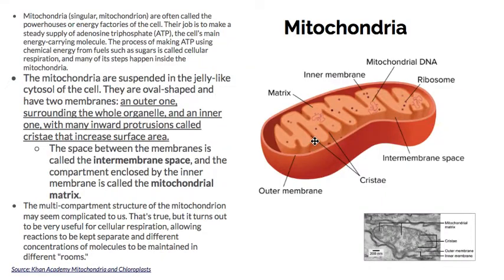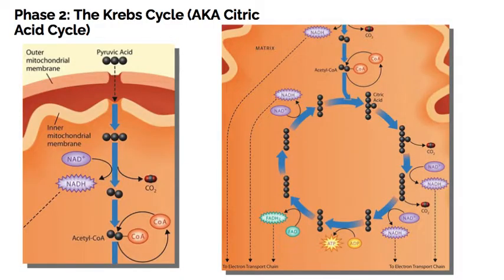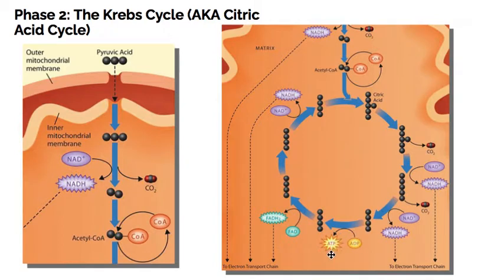Looking at the diagram zoomed in: you just have to have the basic understanding of what goes in, what goes out, where it occurs, and how much ATP is produced. Pyruvic acid enters and is turned into acetyl-CoA, which then enters the Krebs cycle. Important electron carriers such as FADH2 and NADH are produced, and one ATP is generated per turn of the cycle — so for every glucose molecule, we end up getting two ATP molecules from the Krebs cycle.